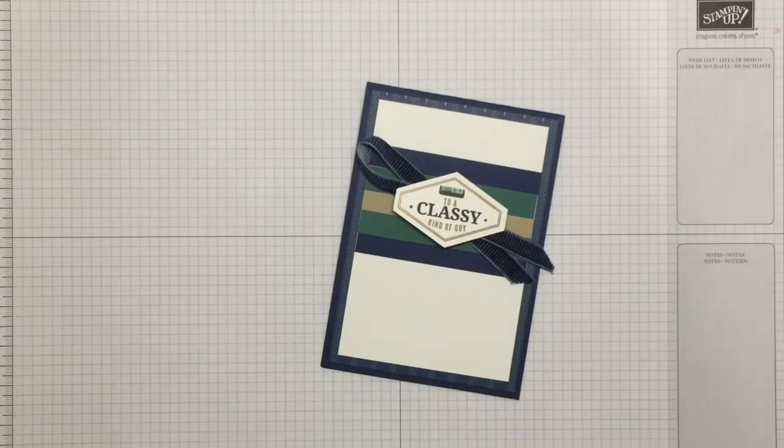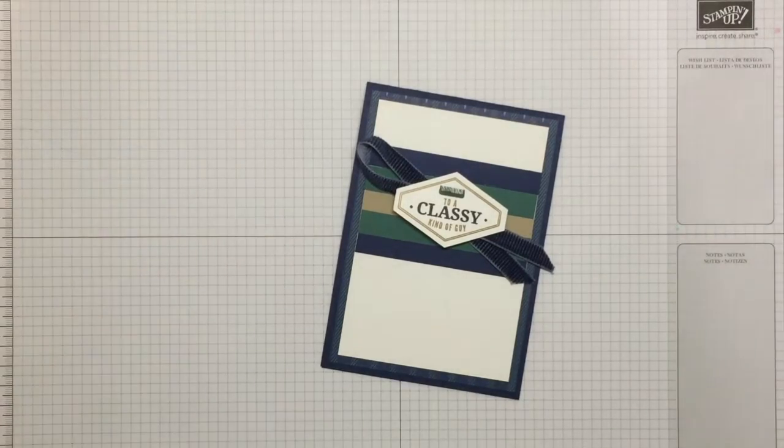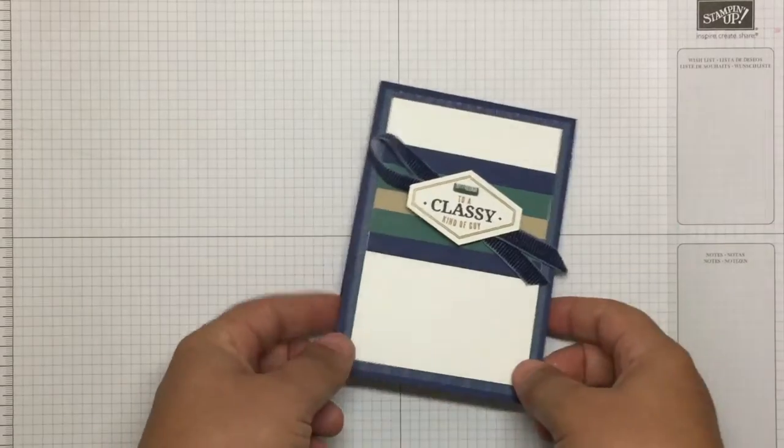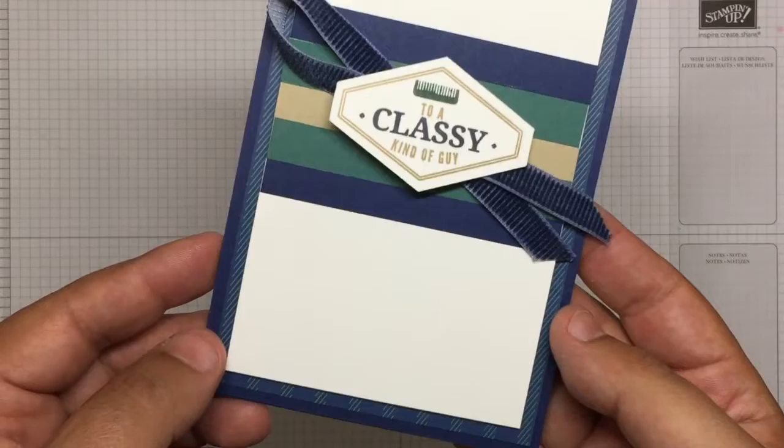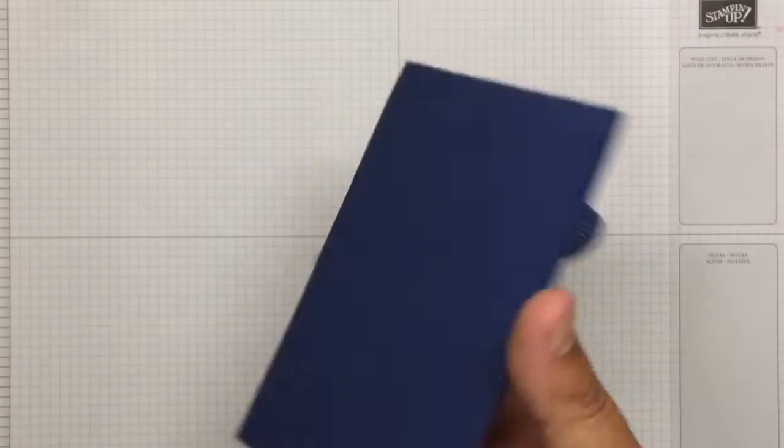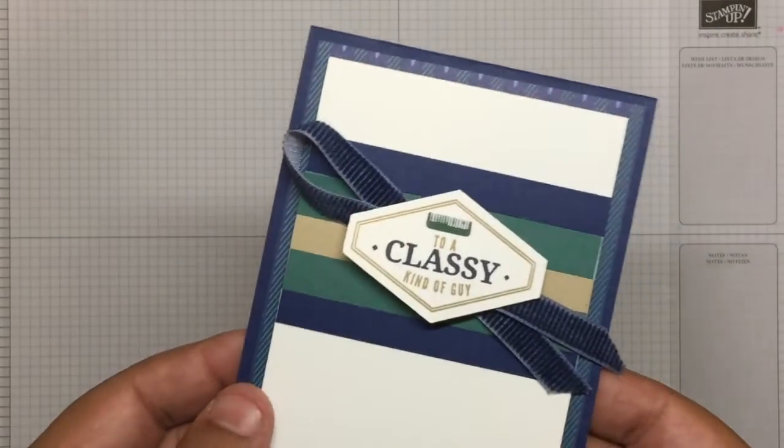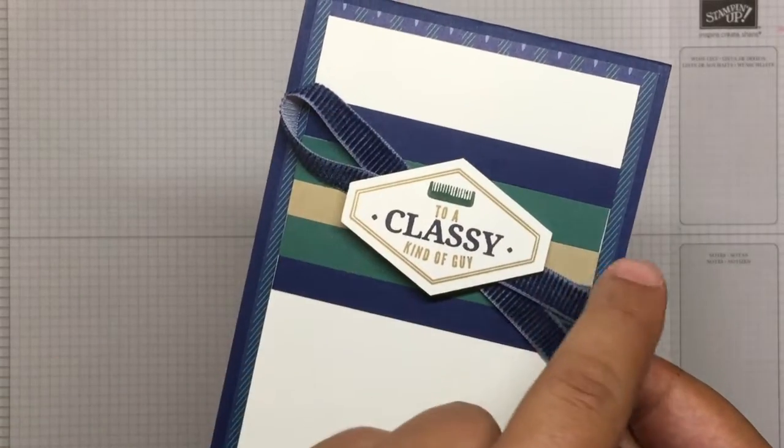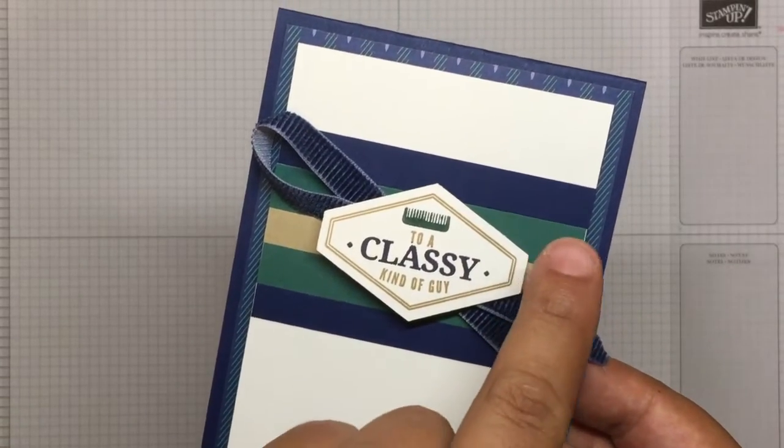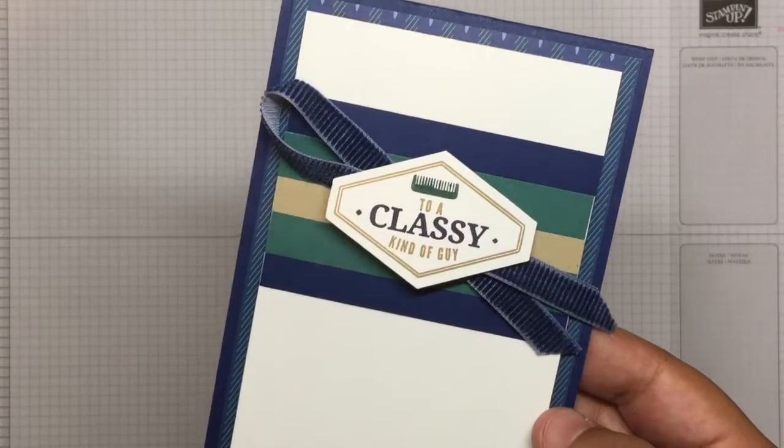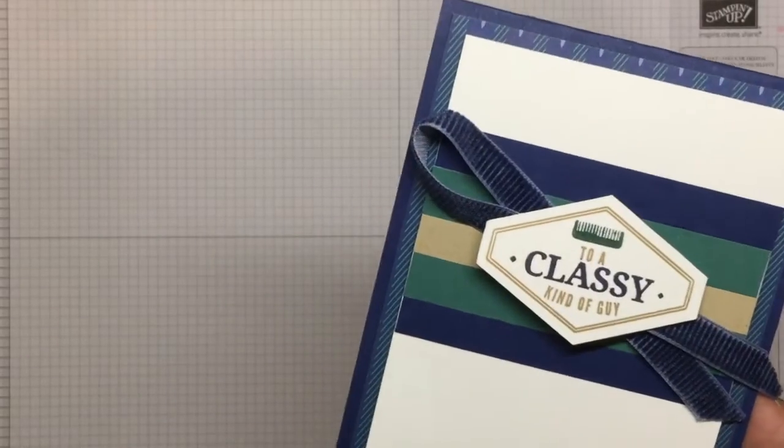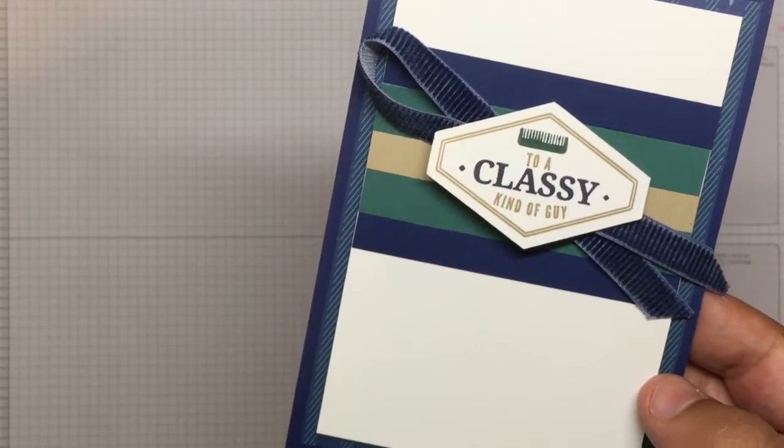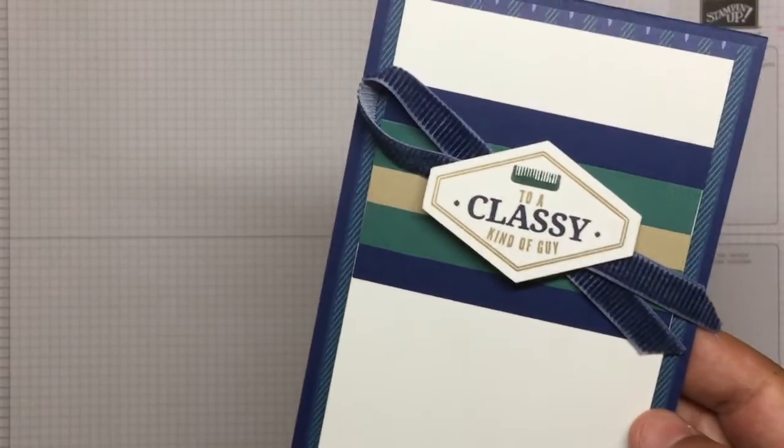Hi everybody, today I am going to make this card for us. I'll just bring it up a bit higher so you can have a look. So what I've got is a Knight of Navy card base. I've got some strips of Knight of Navy, Tranquil Tide and Crumb Cake. We've got this stamp which is from the Truly Tailored stamp set.